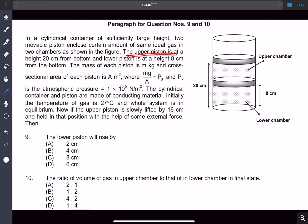The upper piston is at a height 20 centimeters from the bottom and the lower piston is at a height 8 centimeters from the bottom. The mass of each piston is m kg and the cross-sectional area of each piston is A meter square. It's given that mg equals P0 times A and P0 is the atmospheric pressure.